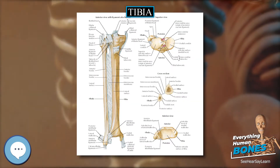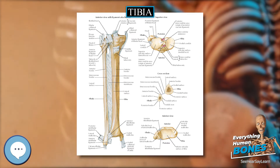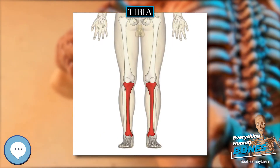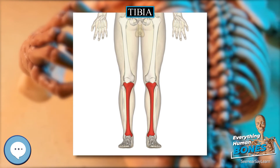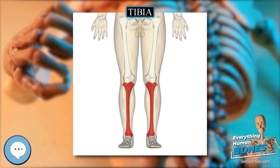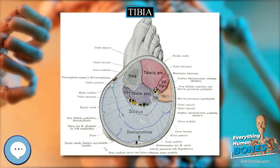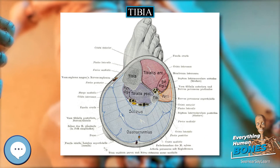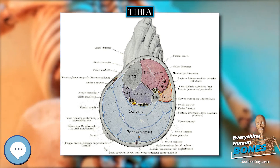The lateral condyle presents posteriorly a flat articular facet, nearly circular in form, directed downward, backward, and lateralward, for articulation with the head of the fibula. Its lateral surface is convex, rough, and prominent in front.